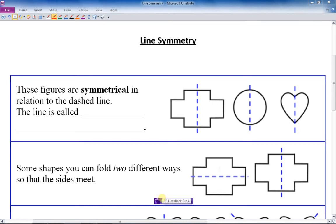Okay, in this lesson we are going to be talking about line symmetry. First, at the top of the page it says these figures, these three figures on the right-hand side, are symmetrical in relation to the dashed line. The dashed line itself is called a line...